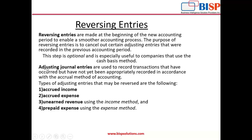Adjusting entries are used to record transactions that have occurred but have not yet been appropriately recorded in accordance with the accrual method of accounting. In accounting, adjusting entries are journal entries usually made at the end of the accounting period to allocate the incomes and expenditure to the period in which they actually occurred. It is a mere application of the accrual basis of accounting.